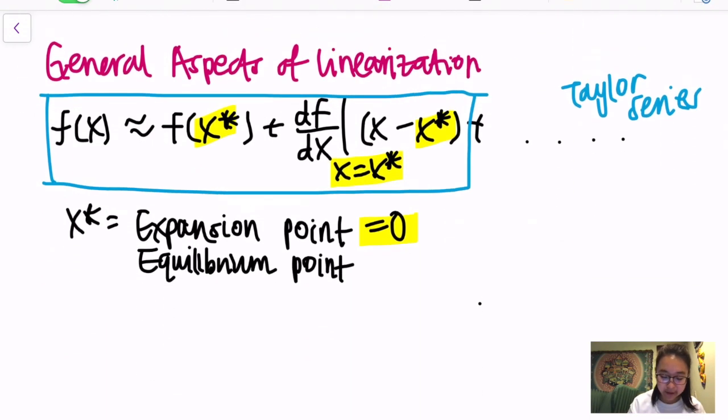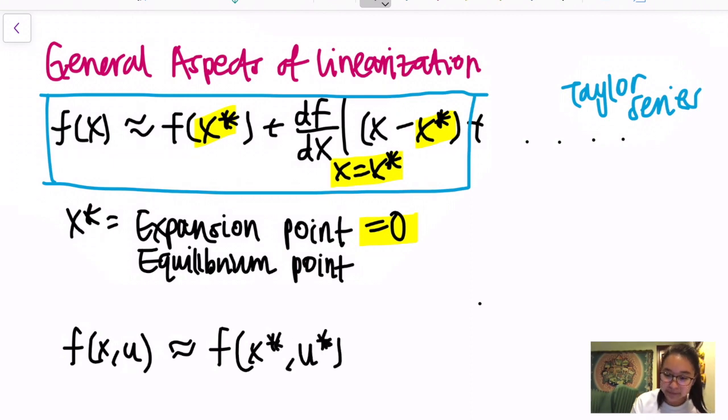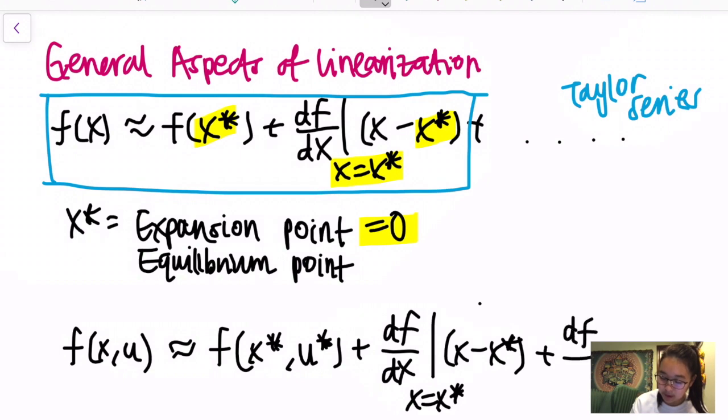As you notice right here, the only variable you have is x, right? But that's not usually the case with the system. Usually in a system you have an x variable representing your state space, but then you also have a u representing the controls you're adding. So in order to follow suit with that, we can expand this equation to include the input u as our controls. Then that would mean that f(x,u) will become approximately equal to f(x*,u*) + df/dx evaluated at x=x* times the same thing plus df/du at u=u* times the difference.